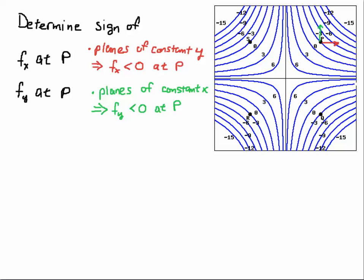Similarly, let's see what's happening at Q. I want to know the partial of F with respect to X at Q and the partial of F with respect to Y at Q. If I draw the positive X direction and look at what's happening here — keeping Y constant — I would be going down the contours, I'd be decreasing. So if I were to tilt this up and look at the plane, it would be a decreasing tangent line.